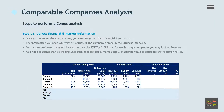Step 2: Collect financial and market information. Once you've found the list of companies that you feel are most relevant to the company you're trying to value, it's time to gather their financial information. An analyst will probably be working with Bloomberg Terminal or Capital IQ to import financial information directly into Excel. If you do not have a subscription to such services, you can simply go through a company's annual and quarterly reports to extract the financials manually.